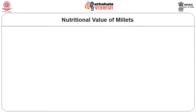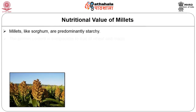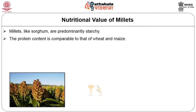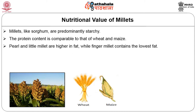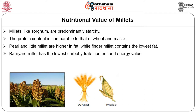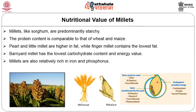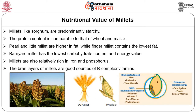What is the nutritional value of millets? Millets like sorghum are predominantly starchy. The protein content is comparable to that of wheat and maize. Pearl and Little millet are higher in fat, while Finger millet contains the lowest fat. Barnyard millet has the lowest carbohydrate content and energy value. Millets are also relatively rich in iron and phosphorus. The bran layers of millets are good sources of B-complex vitamins. However, millets also feature high fiber content and poor digestibility of nutrients, which severely limits their value in nutrition and influences consumer acceptability.